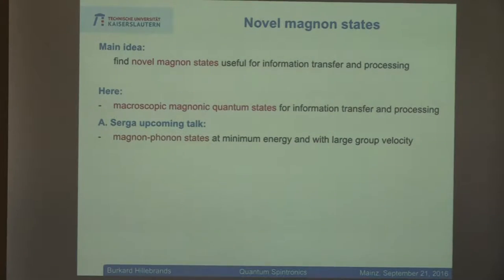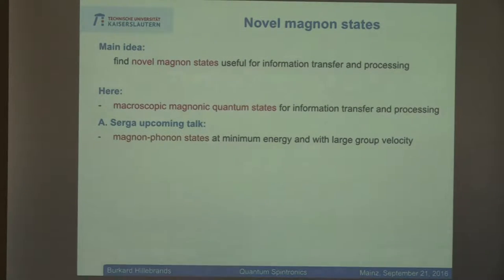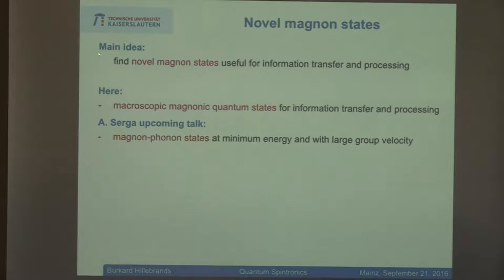We are set to develop new directions using magnons, doing interference, building logic gates with interference patterns. This all has been done, and we were asking in my group: what can we do beyond? We looked around and found it is all there in other communities. If you go to superconductivity or superfluidity — as we learned this morning — you find the concepts all there. The question is simply how well they can be translated into our magnonics world. The main idea is to find novel magnon states useful for information transfer and processing, and one answer is that macroscopic magnonic quantum states might serve here perfectly.